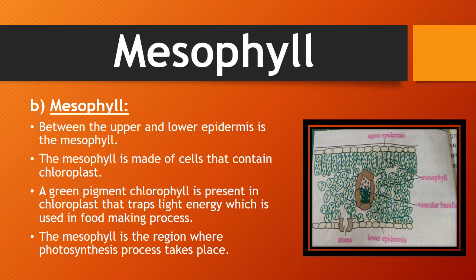Now I will tell you about mesophyll. Between the upper and lower epidermis is the mesophyll. The mesophyll is made up of cells that contain chloroplasts. You can see in this picture that between the upper and lower epidermis, these green cells are the mesophyll cells. Mesophyll cells contain chloroplasts, and a green pigment called chlorophyll is present in the chloroplasts that traps light energy used in the food-making process. The mesophyll is the main region where the photosynthesis process takes place.